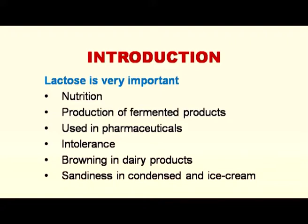Sandiness in condensed milk and ice cream is also because of lactose. Because of the availability of less water in these two products, lactose gets crystallized out, and if the crystallization is in the form of very big crystals, then this defect is known as sandiness. When we consume this product, the crystals are felt on the tongue in the mouth and do not dissolve very quickly. Therefore, a grittiness or sandiness is felt on the tongue, and this defect is known as sandiness.